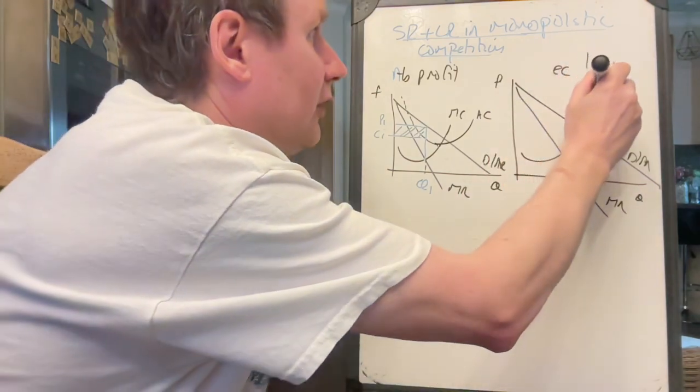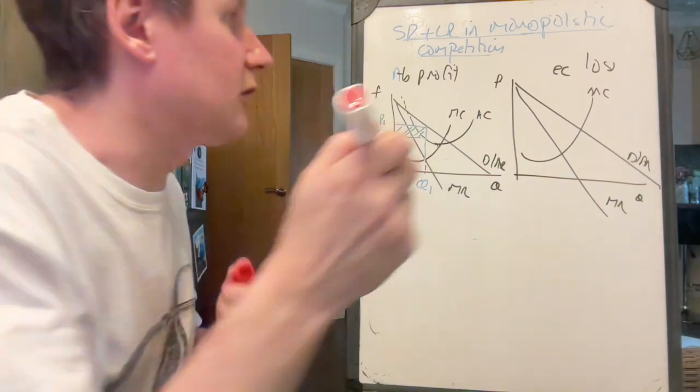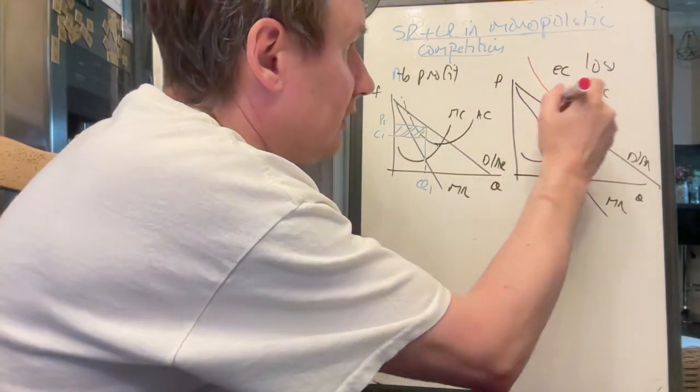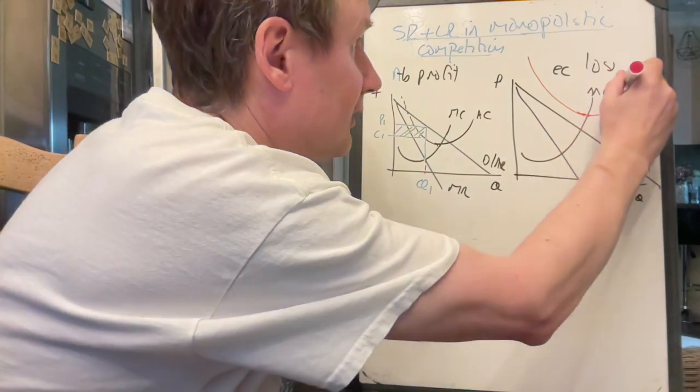We want our firm to make a loss, we said. So what we're going to do is we're going to make sure that average cost stays well above average revenue. Still hits minimum point here, there's average cost.